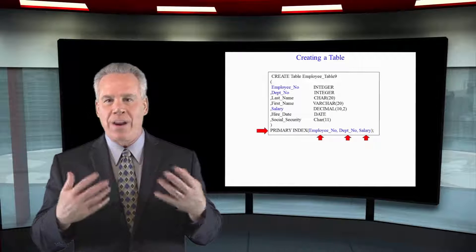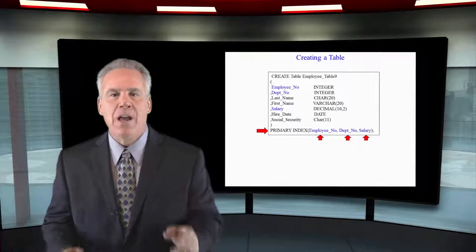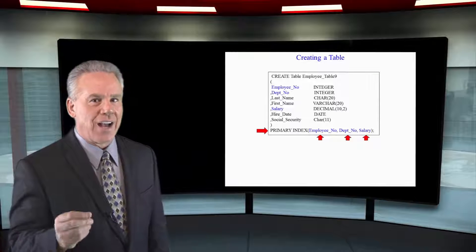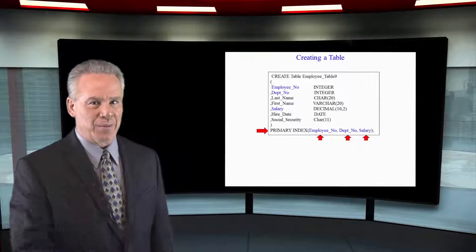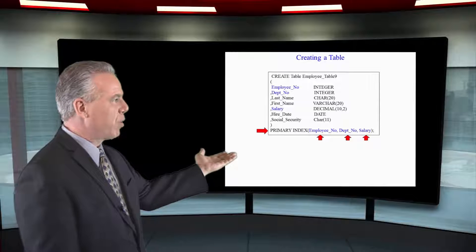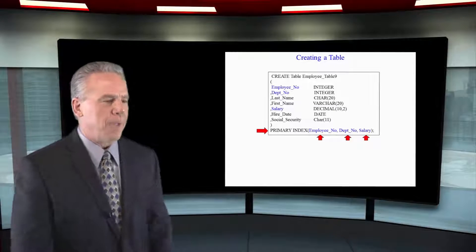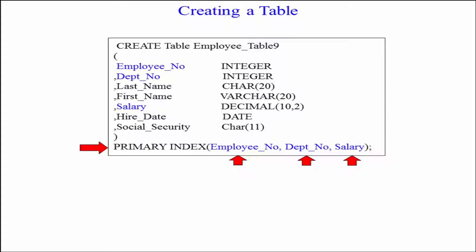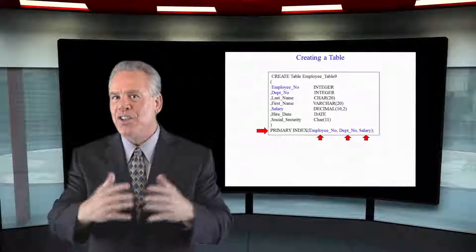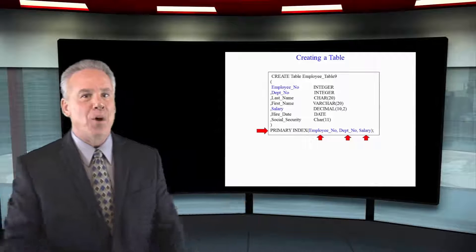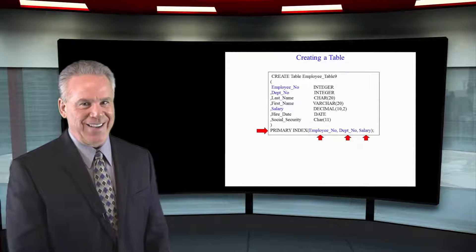You can only have one primary index per table. But in this case I've got a multi-column primary index. It's a non-unique primary index because you don't see the word unique here in the primary index. But I've got employee number, department number, salary, which will be combined in each row, then hashed and distributed. And that is a multi-column primary index.